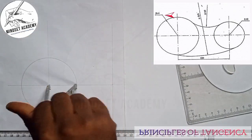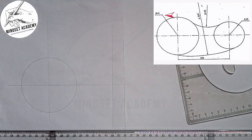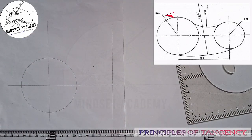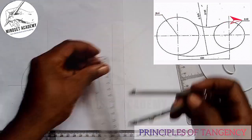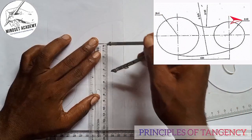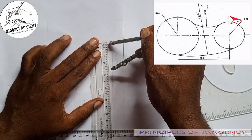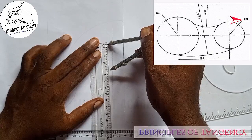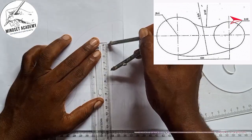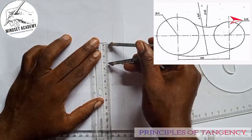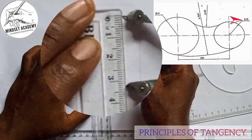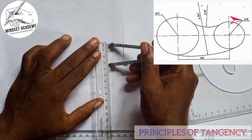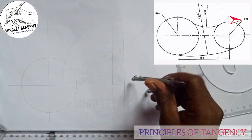The second circle has the radius of 32. I'm going to measure the radius of 32 here on my metal rule, from 0 — this is 30 and this is 32 here.